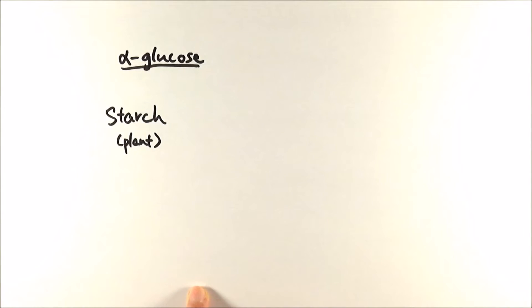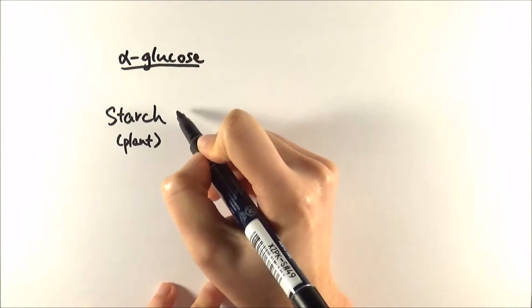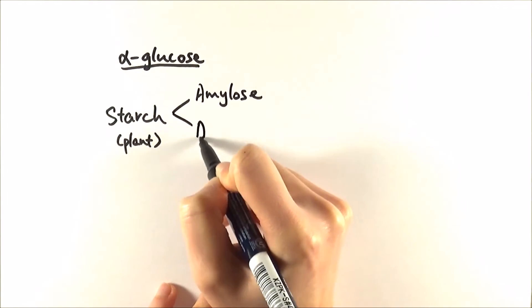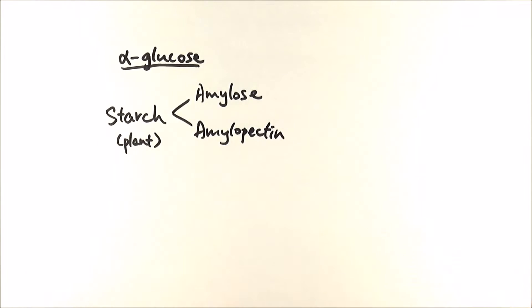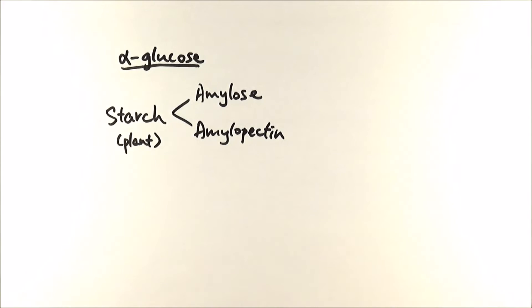Starch is actually a molecule made up of two different parts. One is called amylose and the other one is called amylopectin. These two join up together to make starch.